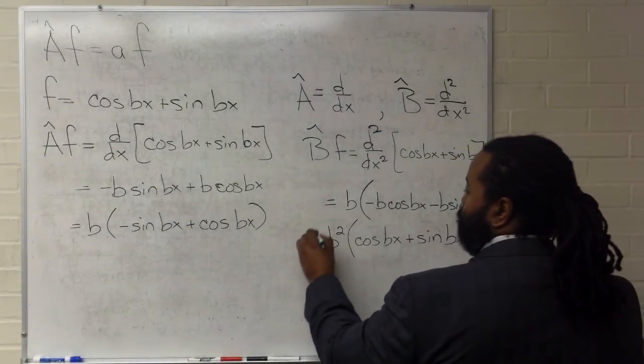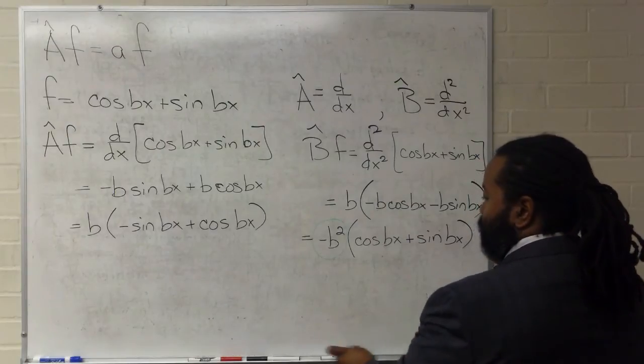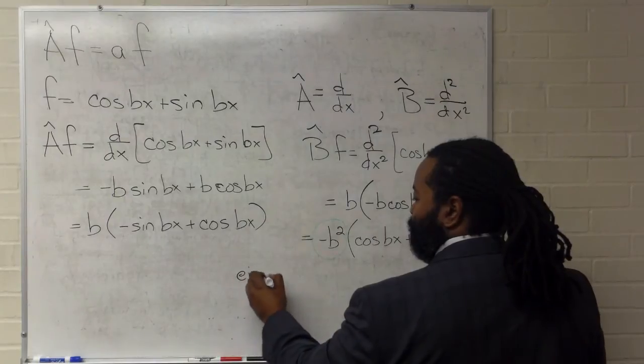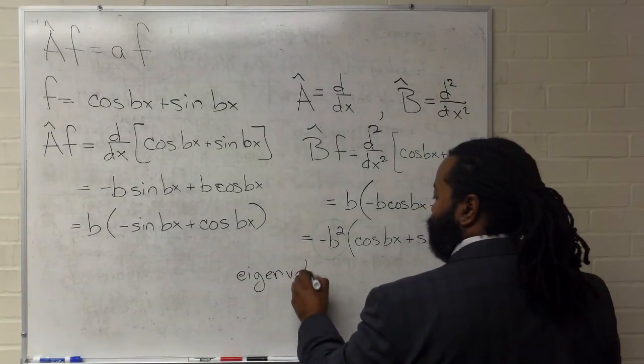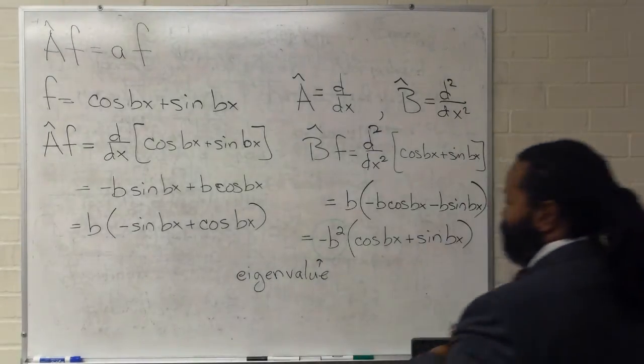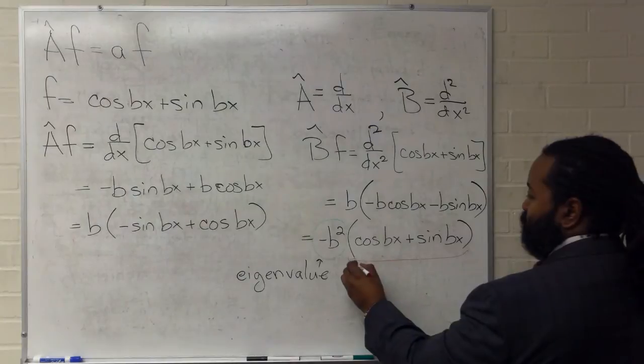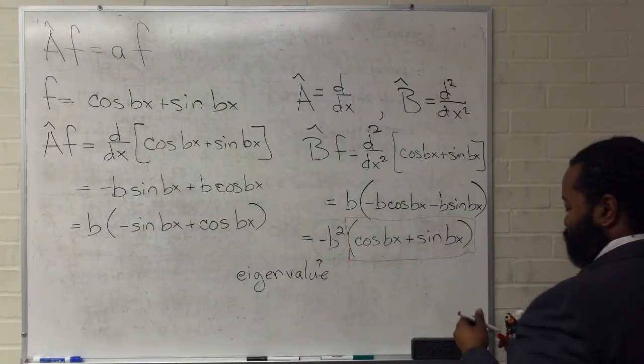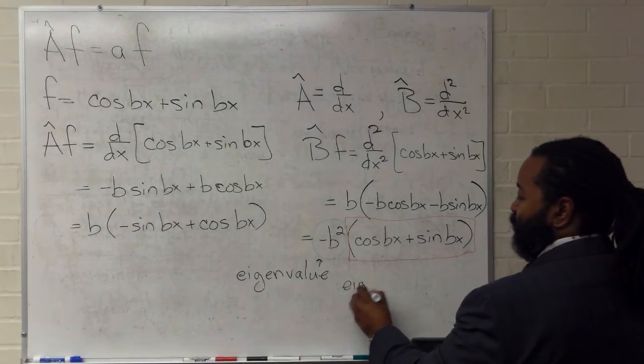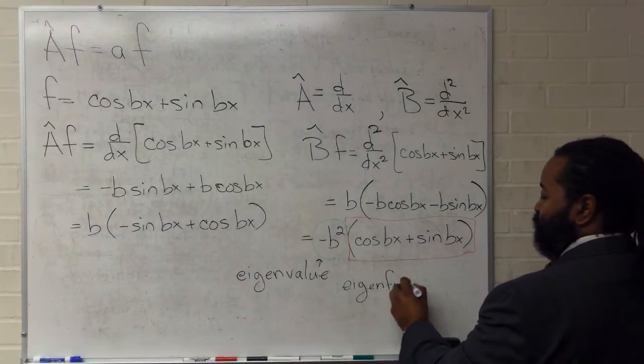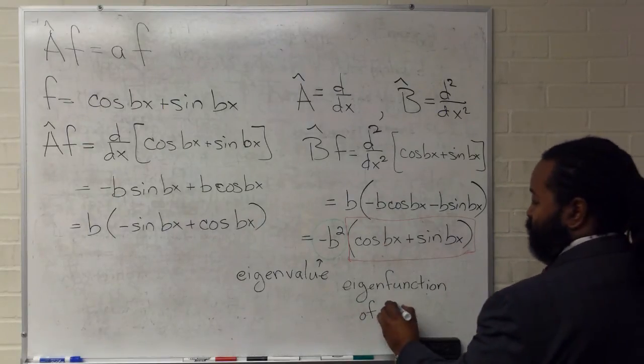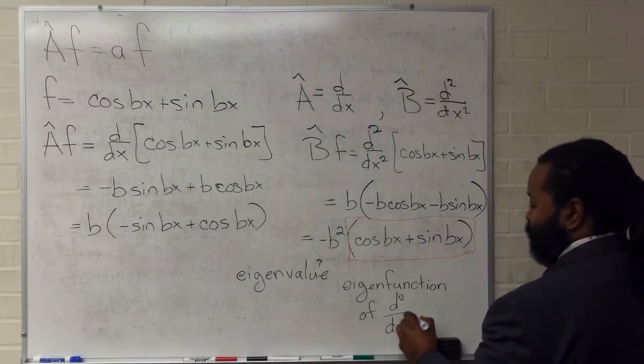We can circle this here as our eigenvalue. And because this function worked, we can then recognize that this is an eigenfunction of our operator B, which is the second derivative.